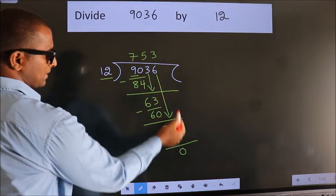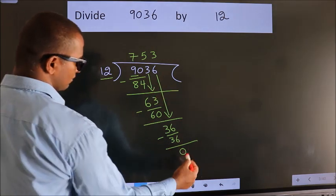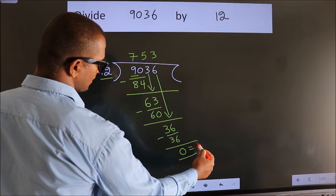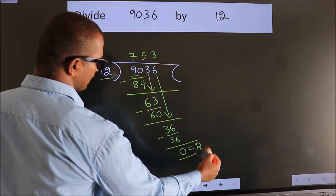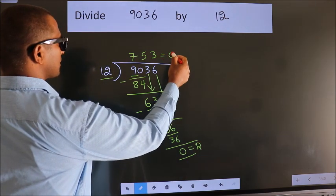No more numbers to bring down, so we stop here. This is our remainder. This is our quotient.